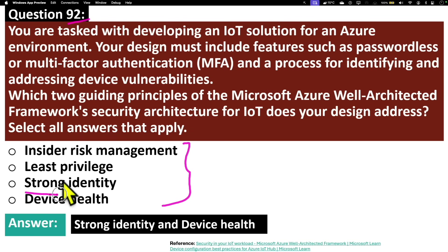The correct answers are strong identity and device health. Strong identity focuses on verifying the identity of devices and users using methods like passwordless authentication or multi-factor authentication. This principle helps prevent unauthorized access and ensures that only trusted entities can interact with your IoT systems. For instance, an employee accessing a smart building control system might use MFA to ensure they are authorized to make changes to the building's environment settings.